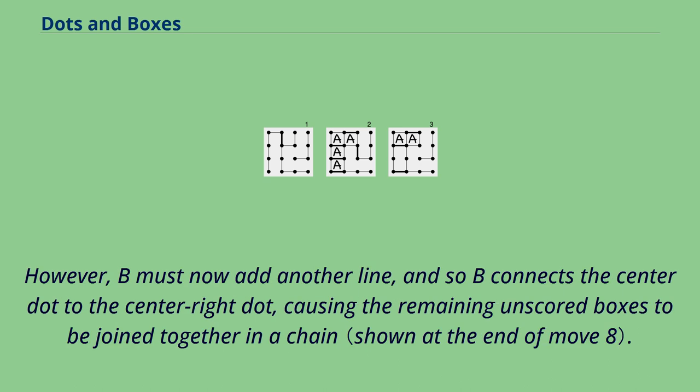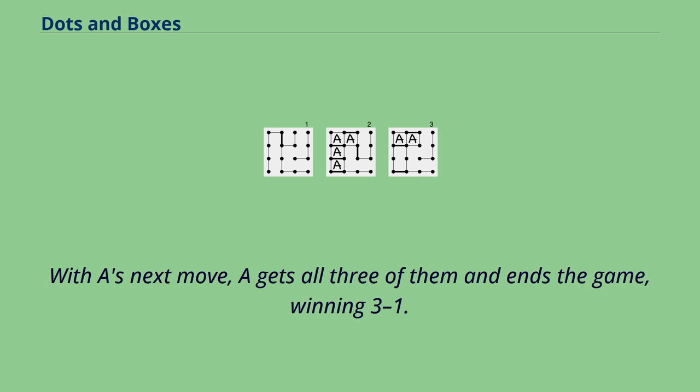However, B must now add another line, and so B connects the center dot to the center right dot, causing the remaining unscored boxes to be joined together in a chain. With A's next move, A gets all three of them and ends the game, winning 3-1.